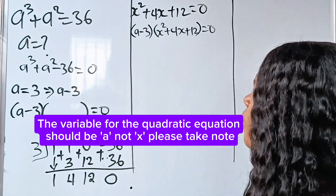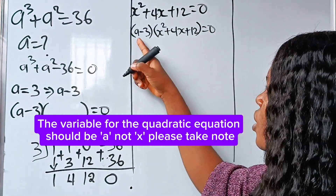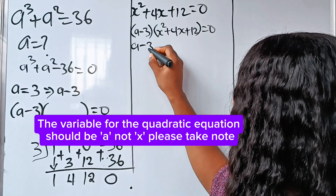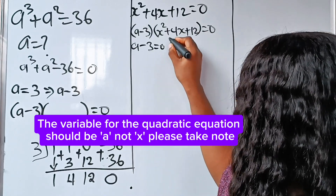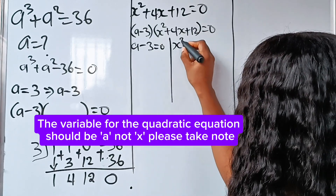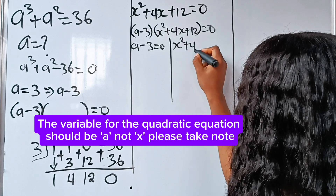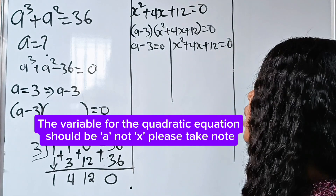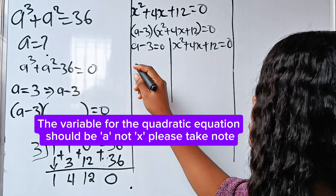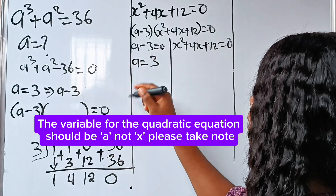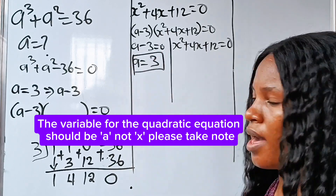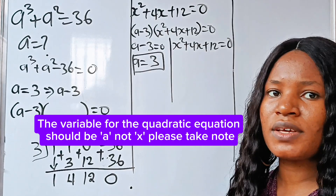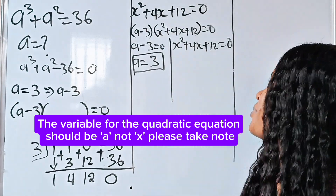It is now obvious that a minus 3 equals 0 — we have done that before — or that a squared plus 4a plus 12 equals 0. From the first factor, a is equal to 3. This is the first value of a. Now let's go ahead and solve the quadratic part — this is the interesting part.